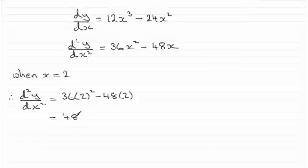which is clearly greater than zero, so what we've got then is therefore a minimum at x equals two.